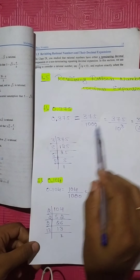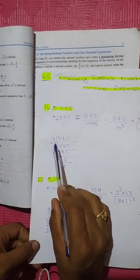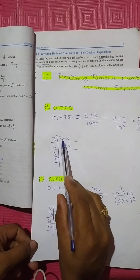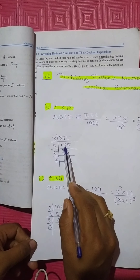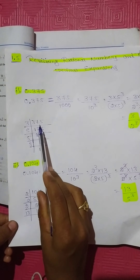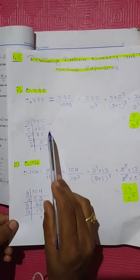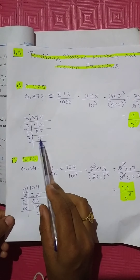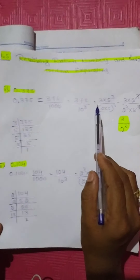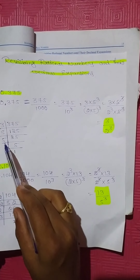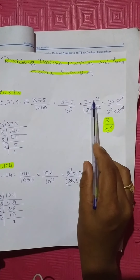Now consider the numerator 375. This can be expressed in prime factors: 375 equals 3 multiplied by 5 three times repeated, which can be written as 3 into 5 to the power of 3. The denominator 10 to the power of 3 can be written as 2 times 5, all cubed.